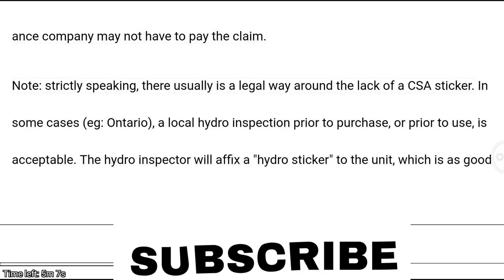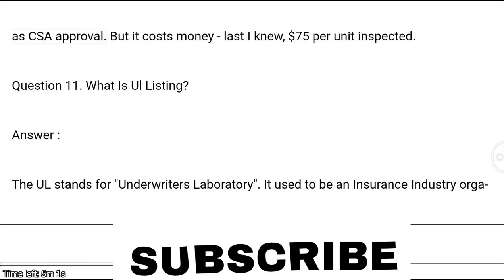Note: Strictly speaking, there is usually a legal way around the lack of a CSA sticker. In some cases, such as in Ontario, a local hydro inspection prior to purchase or use is acceptable. The hydro inspector will affix a hydro sticker to the unit, which is as good as CSA approval, but it costs money — last known, $75 per unit inspected.